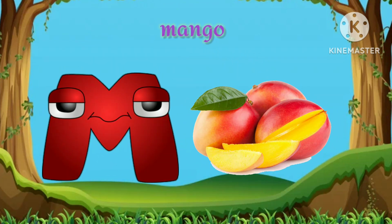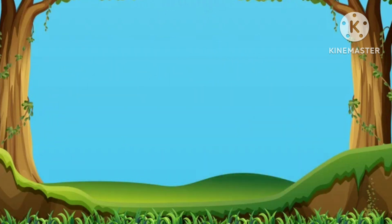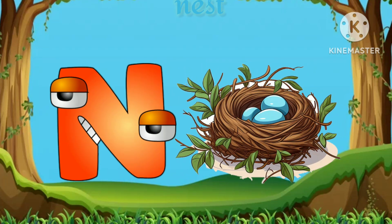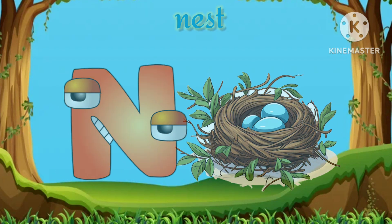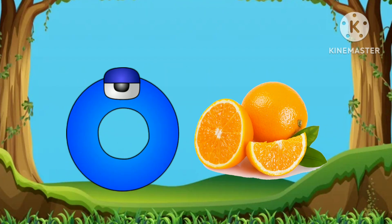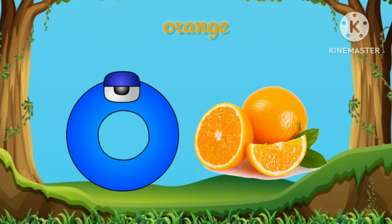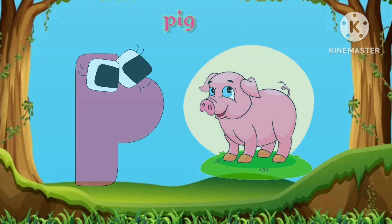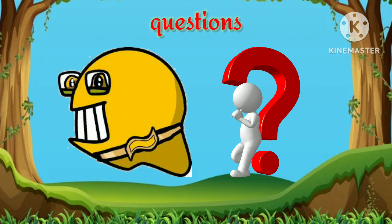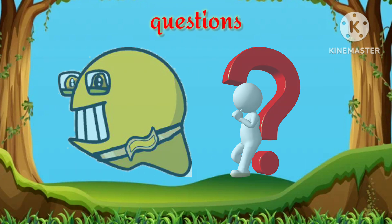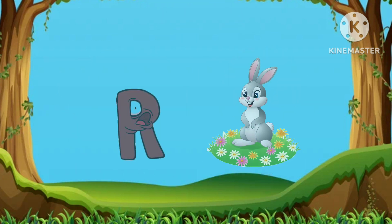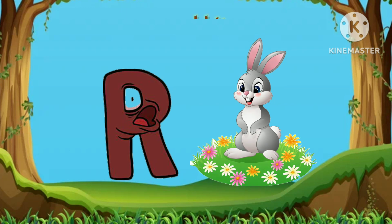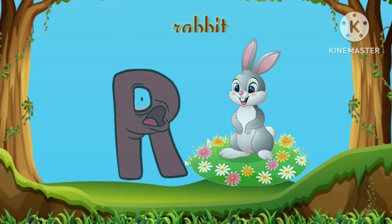M. M for mango. N. N for nest. O. O for orange. P. P for pig. Q. Q for question. R. R for rabbit.